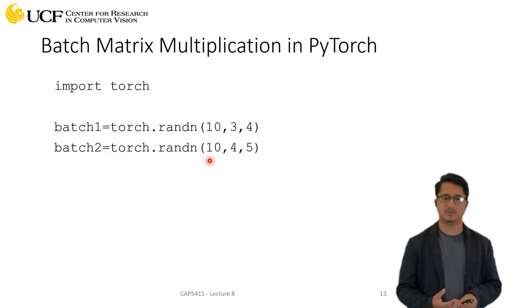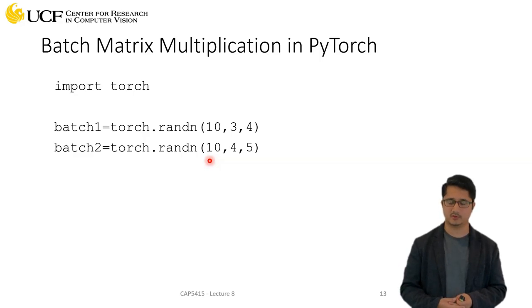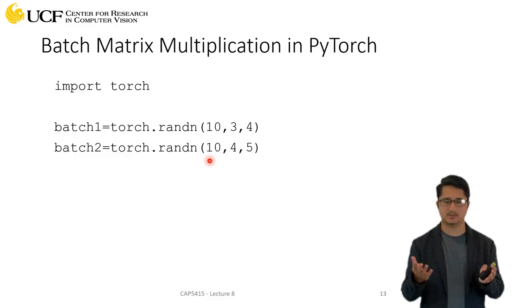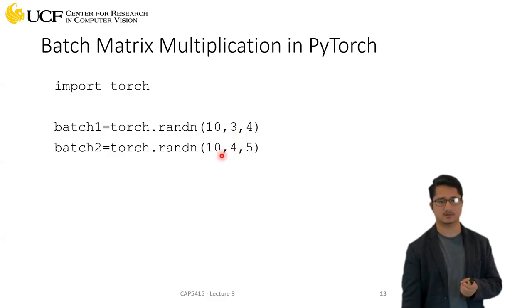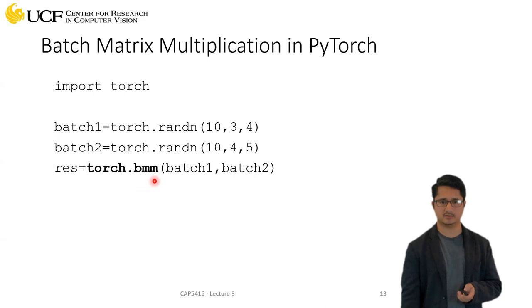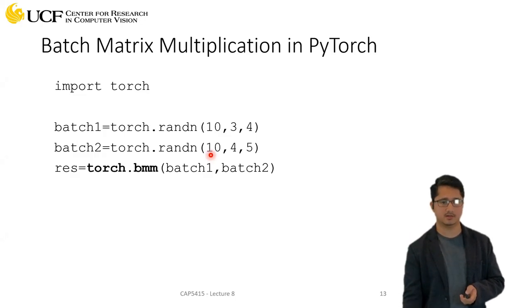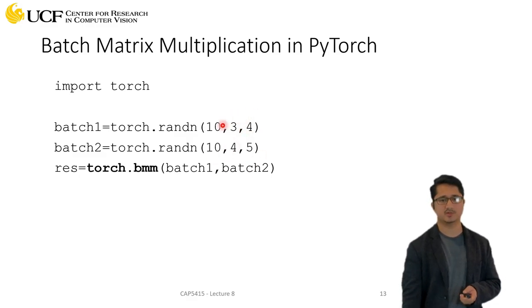We don't multiply matrices independently because training happens in batches — for example, 16 or 32 samples at a time. PyTorch allows batch matrix multiplication using the bmm function. If you have a batch of 10 matrices each of shape 3x4, and a second matrix of shape 4x5, bmm gives you 10 result matrices each of shape 3x5, since each sample is independent.